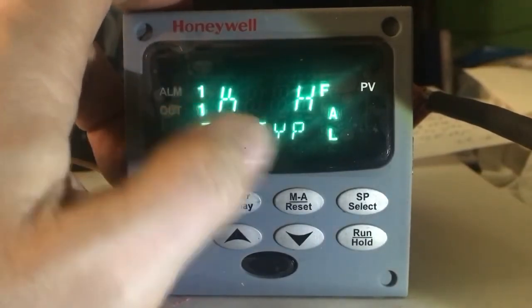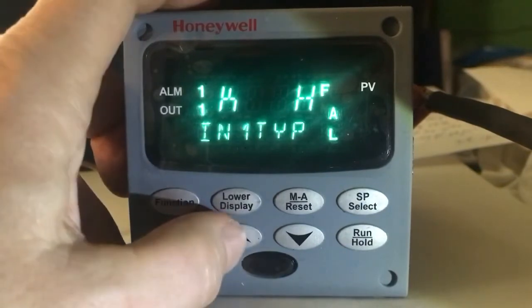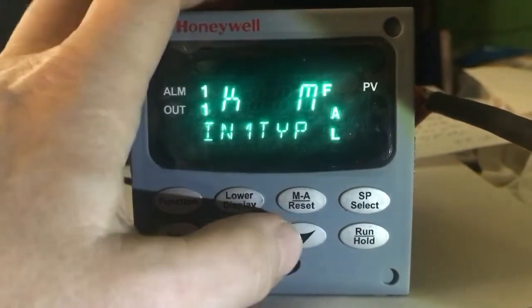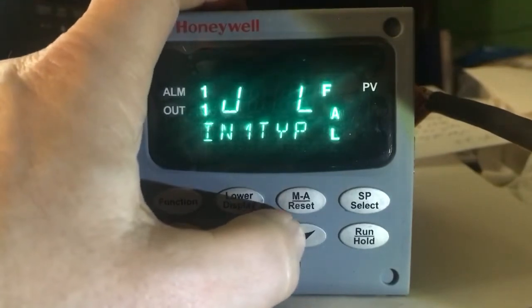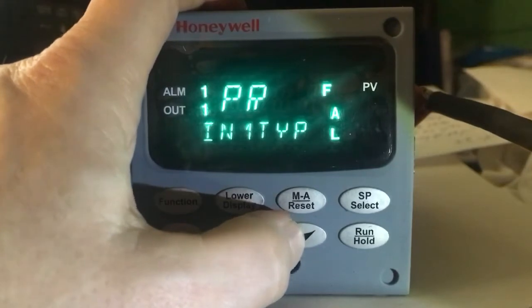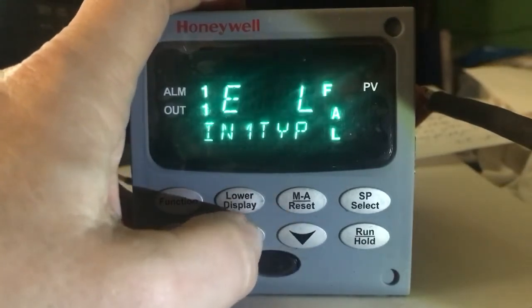Here it's a type k high temperature thermocouple. You can change the thermocouple type by pressing your arrow keys - type j, type e, and your different inputs you could have.